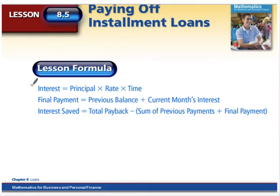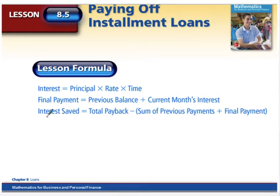Here are our lesson formulas. Our interest is still the same: we take our principal times our rate times our time. Our final payment is made from the previous balance from the previous month plus the current month's interest. After that we can calculate how much money we saved by paying the loan off early. The interest saved is what we should have paid back minus the previous payments and the final payment.